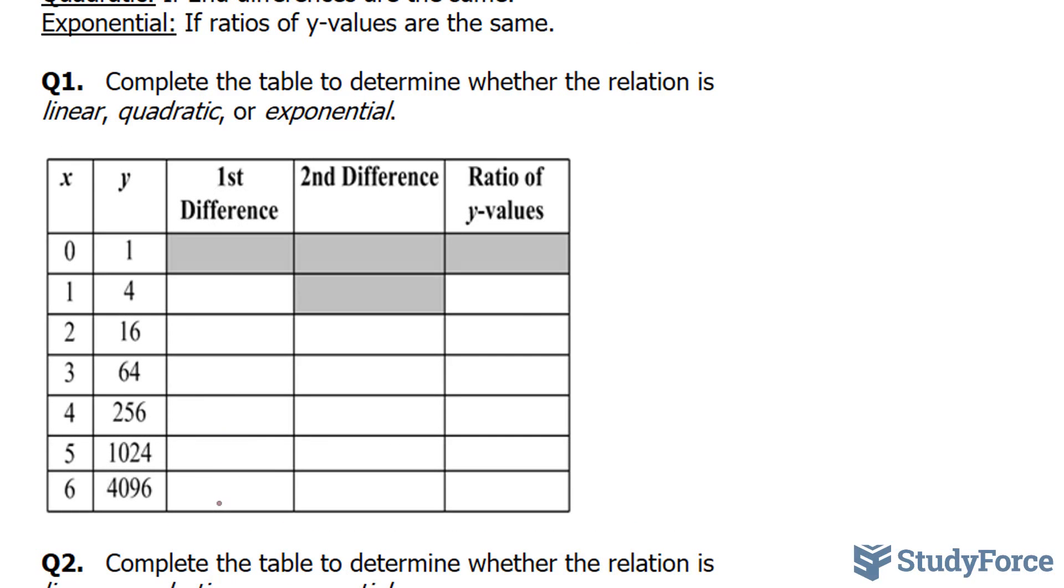We'll start with this column. 4 minus 1, 16 minus 4, 64 minus 16, 256 minus 64. Subtracting these, we end up with 3. This gives us 12. This gives us 48. These two give us a difference of 192. These are not the same. Therefore, it is not linear.